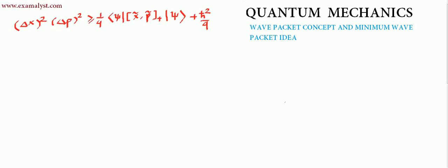In this lecture series we'll talk about the minimum wave packet that satisfies the Heisenberg uncertainty principle. We need a wave function that satisfies Δx·Δp = ℏ/2. As discussed in the last lecture, all wave functions that satisfy the Heisenberg uncertainty principle will be in the form of a wave packet.